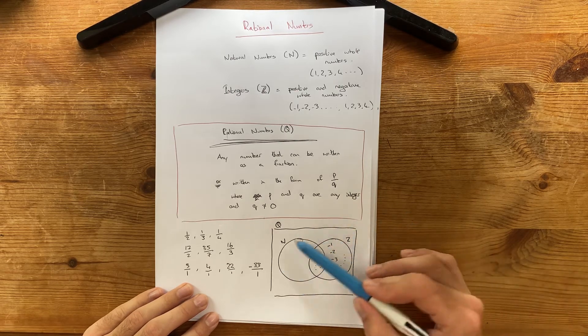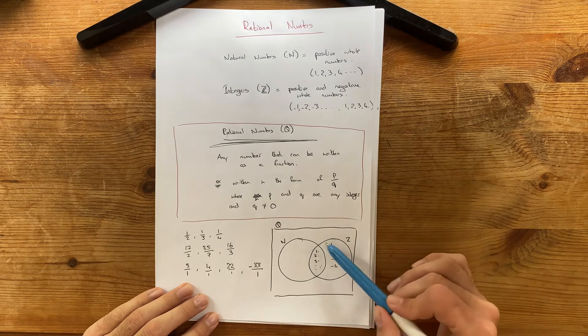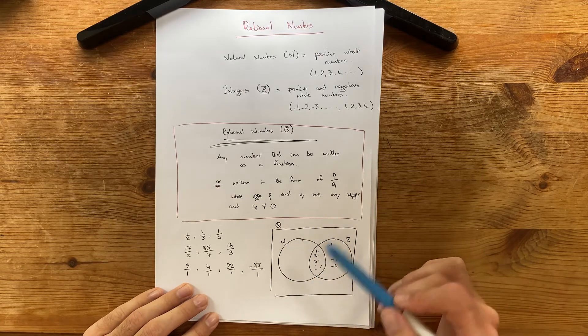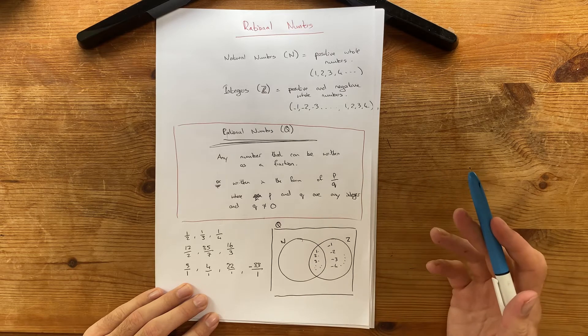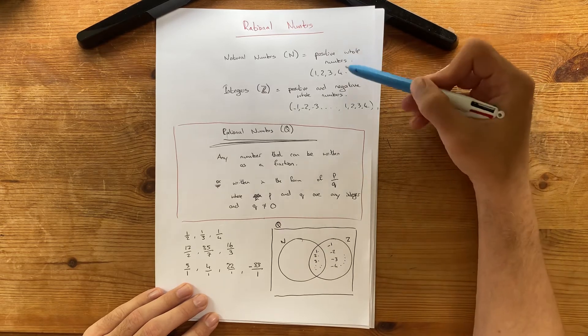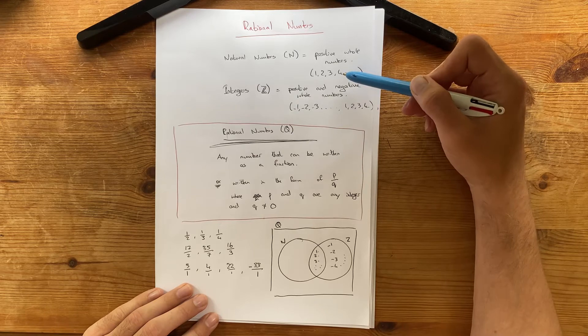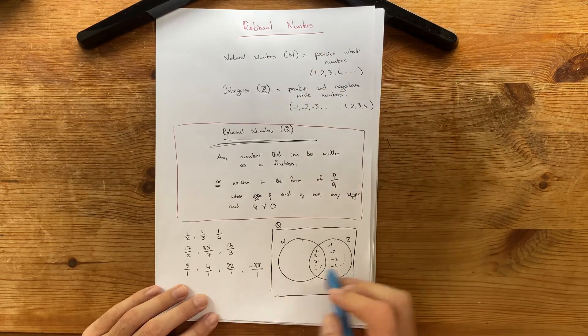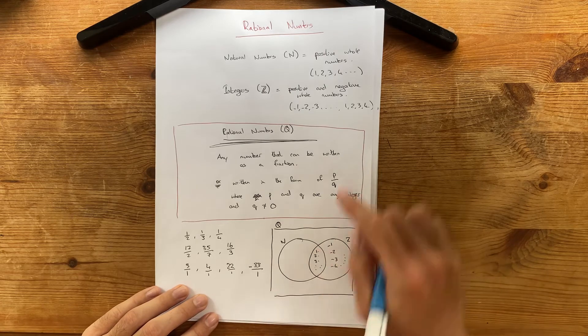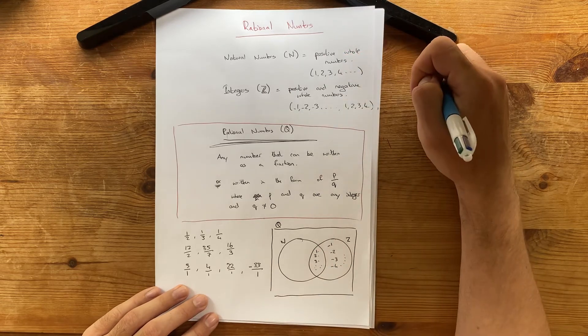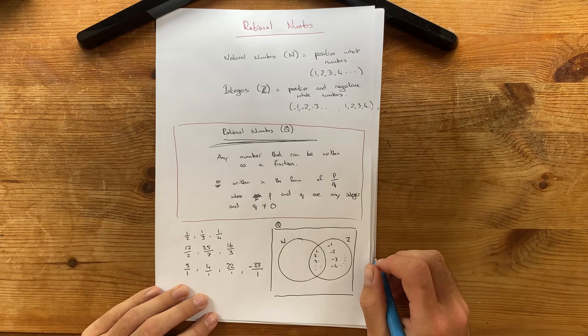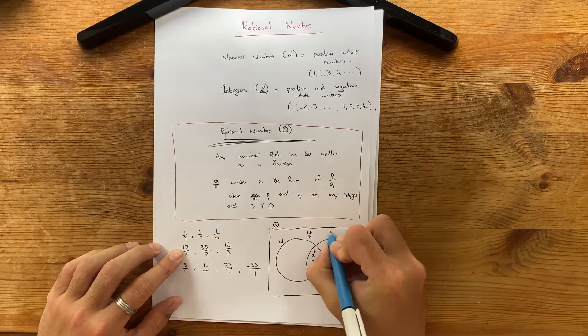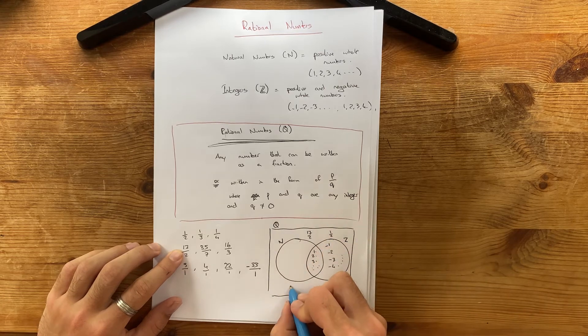And then outside of here, the question is, is there anything in the universal set? And yes, of course, there is. Because natural numbers don't involve fractions. And integers don't involve fractions. But you have to be careful. You can't put 2 over 1, because 2 over 1 is actually a natural number. But we can have numbers such as this 17 over 2, or a half, or a quarter.